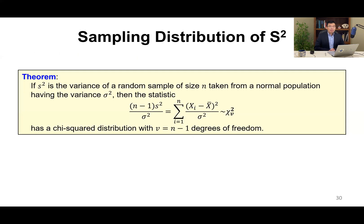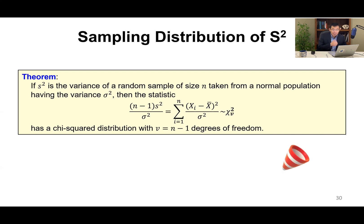Based on the sum of squares of the residues, we can obtain the sampling distribution of s-square. s-square is the sample variance, with sample size n taken from a normal population with population variance sigma-square. The statistic (n minus 1) s-square over sigma-square is approximately chi-square distributed with v = n minus 1 degrees of freedom.